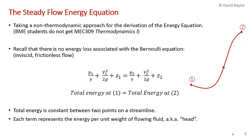I've drawn a streamline going from point 1 to point 2. Bernoulli's equation applies for inviscid flow — flow that has no viscosity, so it's frictionless. If it's a frictionless flow, the total energy in the flowing fluid at point 1 equals the total energy at point 2. We have the pressure energy, or flow work, the kinetic energy, and the potential energy, and the sum of those three are equal at point 1 and point 2.